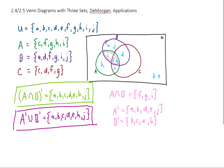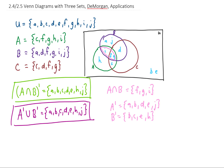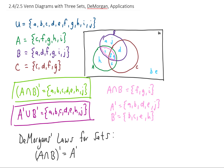It turns out this is not a coincidence — in fact, this is always the case, and it's called one of DeMorgan's Laws. There's also a second DeMorgan's Law, which looks pretty similar: it says that A union with B, complement is equal to A complement intersected with B complement.